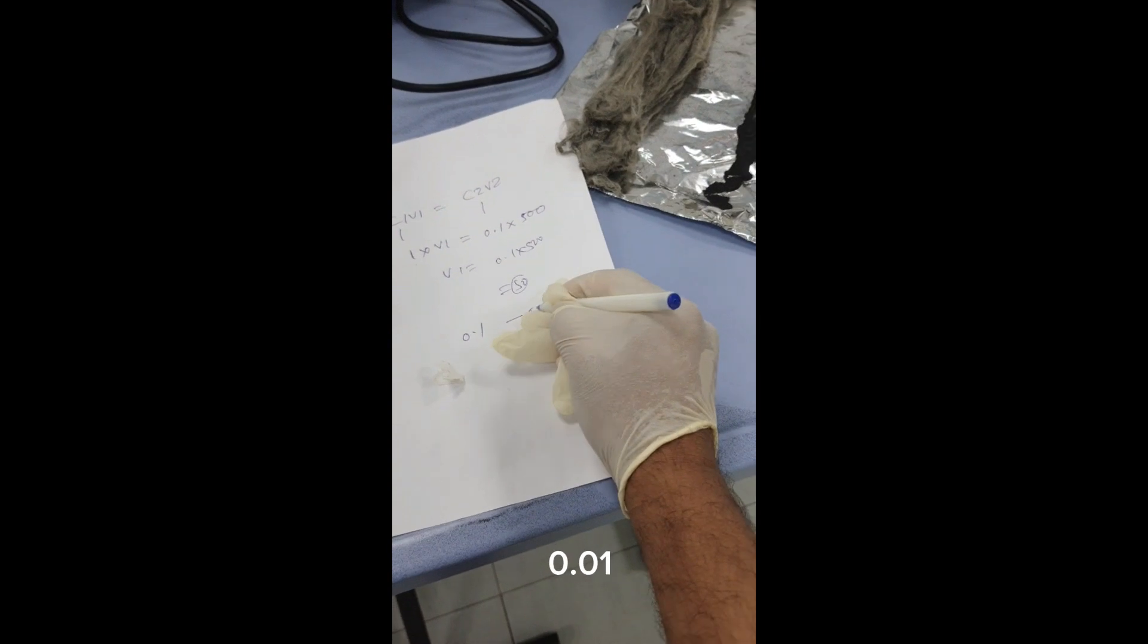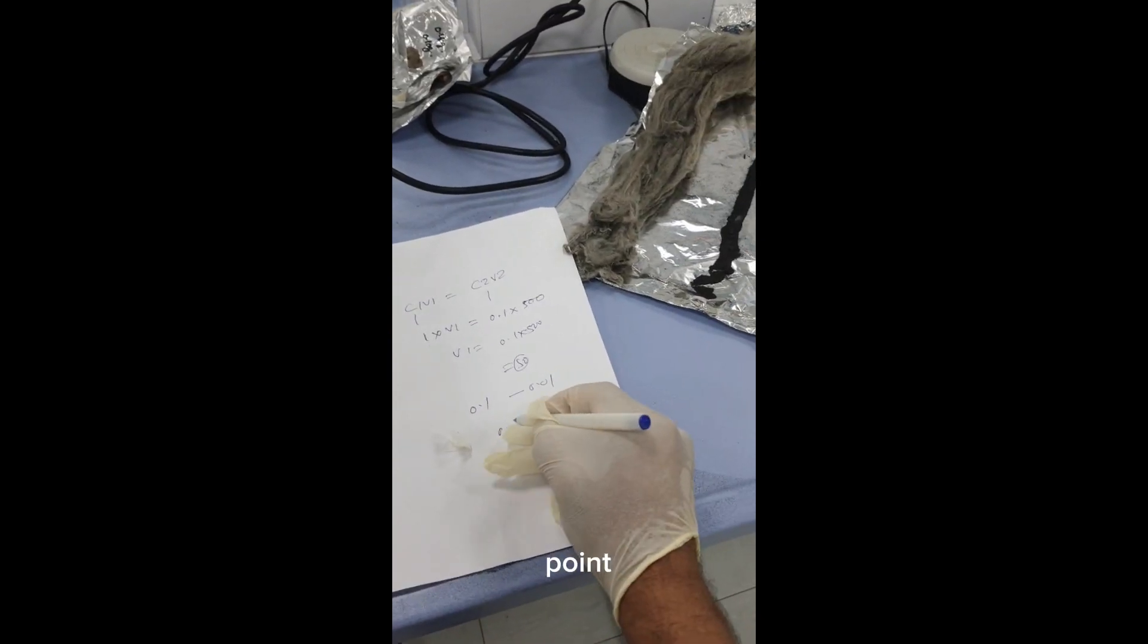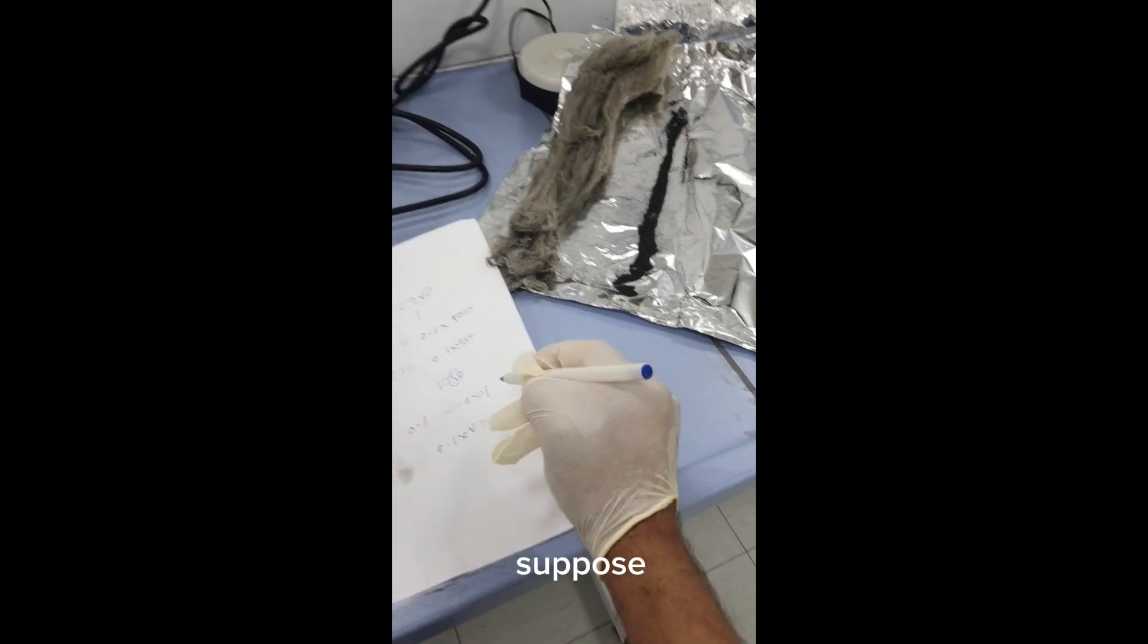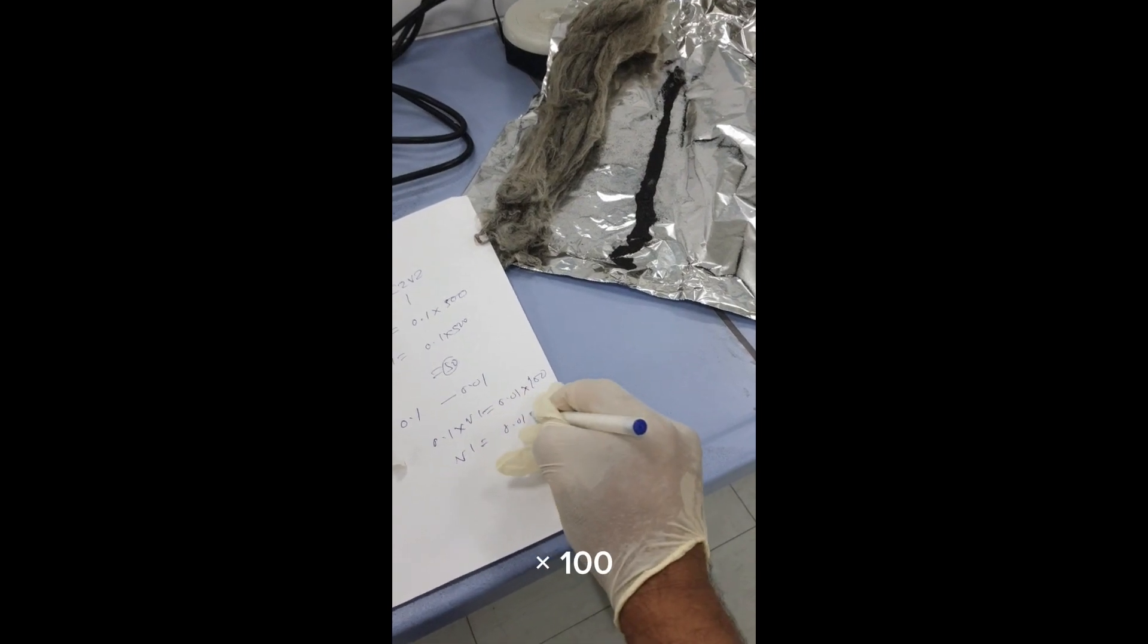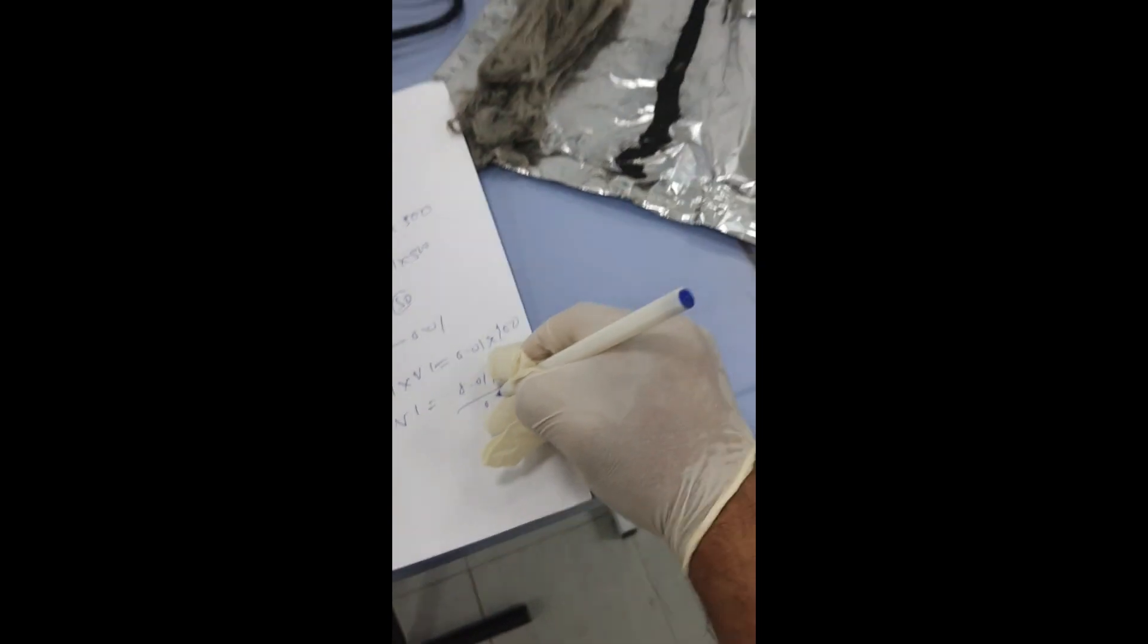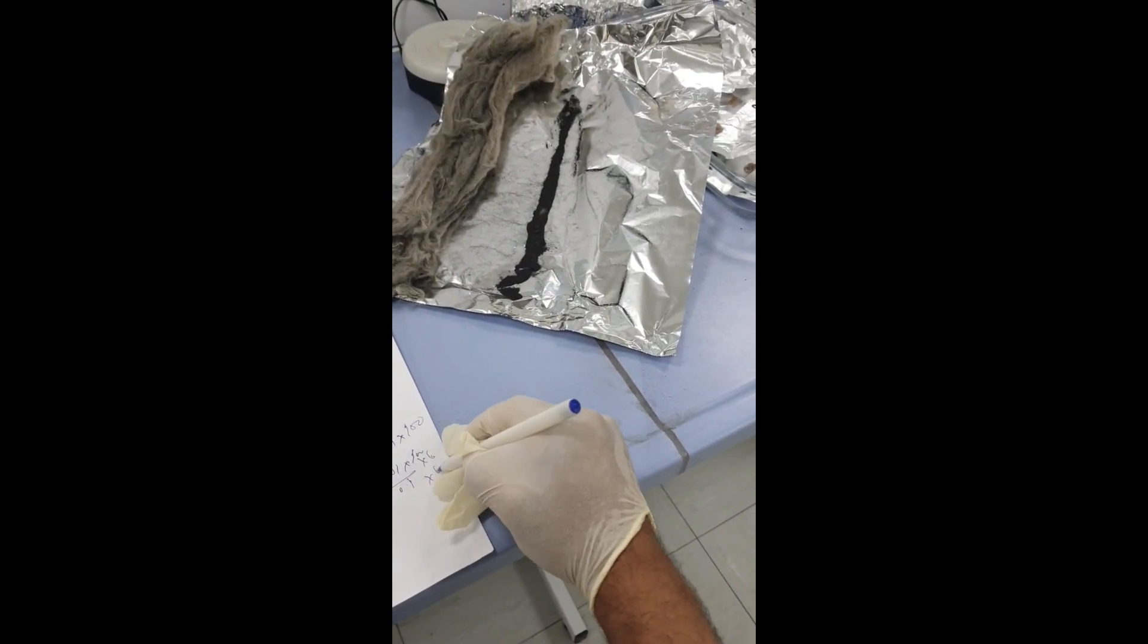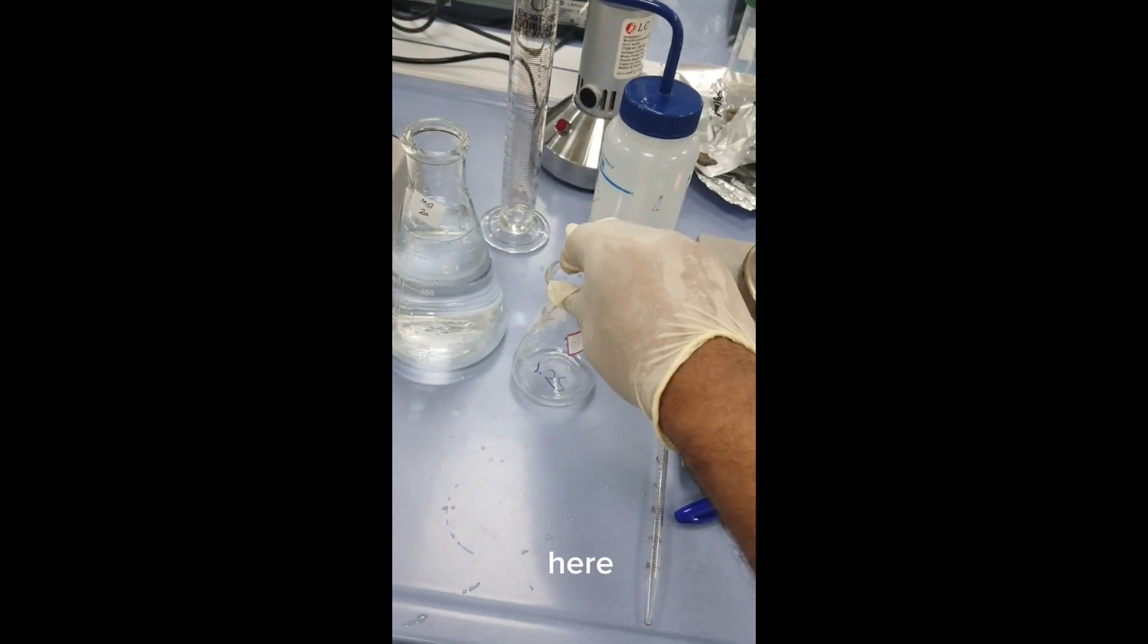Suppose this is 0.1 as our stock and we want to go to 0.01 in 100 ml. V1 would be 0.01 times 100 divided by 0.1, so we have to take out 10 ml and add 90 ml of deionized or distilled water.